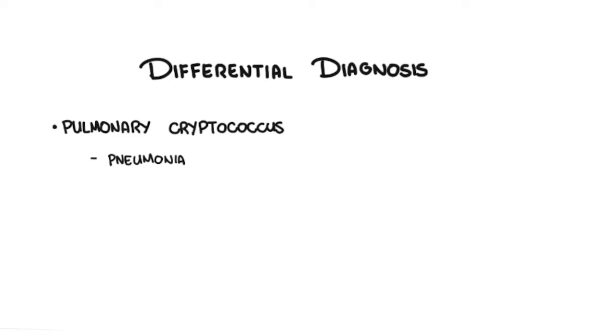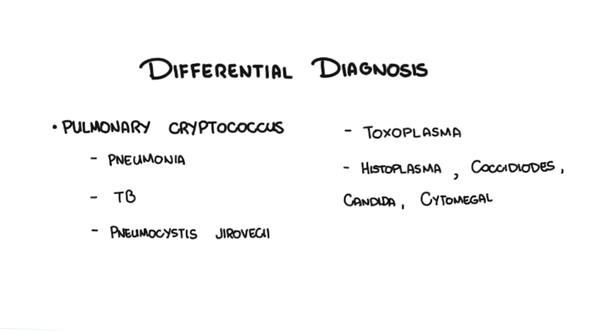Important differential diagnoses to consider for pulmonary cryptococcus include pneumonia, tuberculosis, and other conditions or diseases that cause problems in immunosuppressed people, including pneumocystis, toxoplasma, histoplasma, coccidioides, candida, cytomegalovirus, and mycobacterium avium complex.